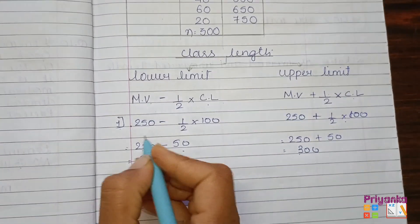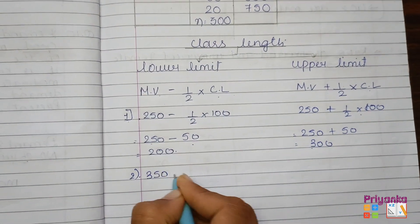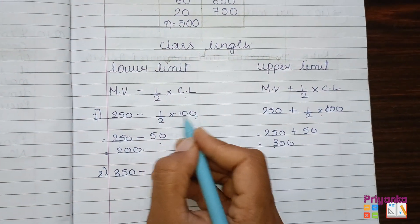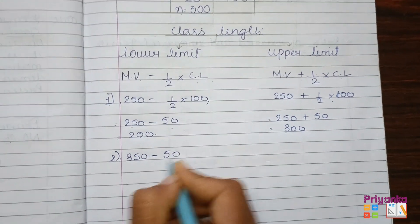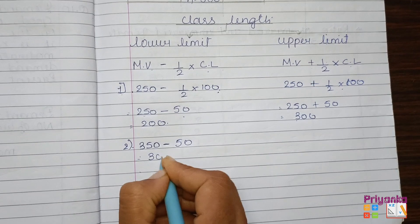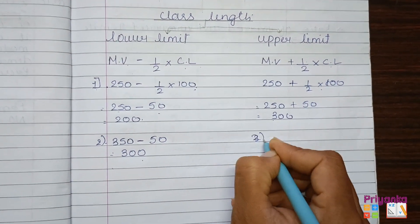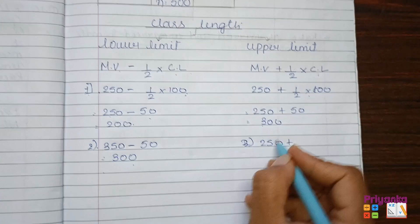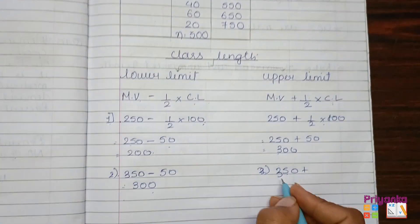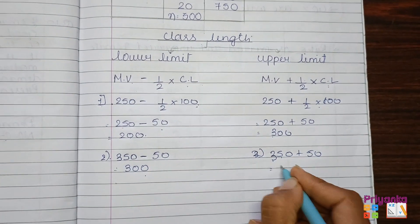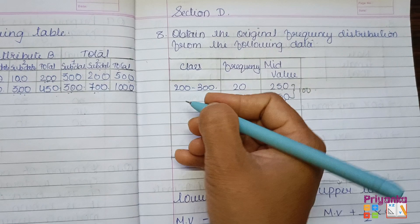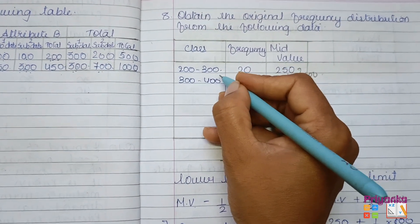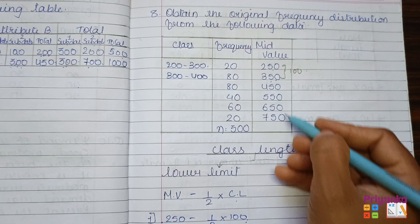For the second row, mid value is 350. Half of class length 100 is 50. Lower limit: 350 minus 50 equals 300. Upper limit: 350 plus 50 equals 400. So the next original frequency distribution class is 300 to 400.